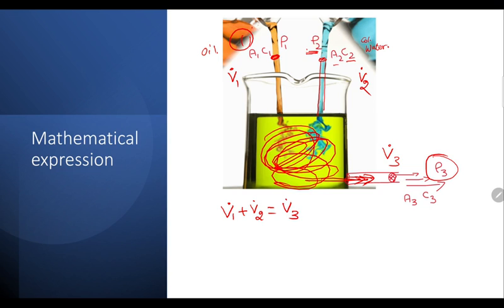But when we think of the mass flow rate, that is when the problem is - well it's not really a problem - but mass flow rate 1 plus mass flow rate 2 equals mass flow rate 3. The difference is that mass flow rate ṁ is nothing but density times the volumetric flow rate.